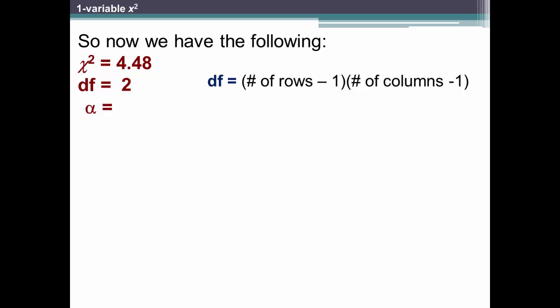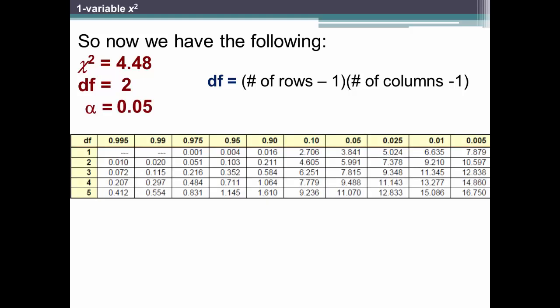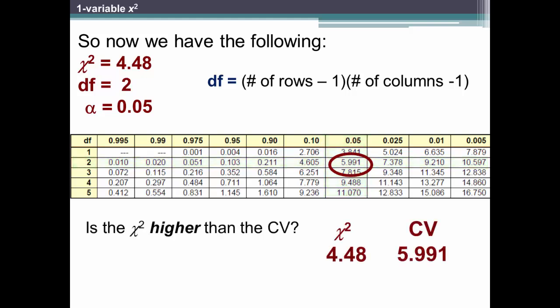Assume that we have established our alpha at 0.05. Now go to the critical value table and find where 2 degrees of freedom intersect with 0.05 alpha level, and it is 5.991. Is our chi-square of 4.48 higher than the critical value?